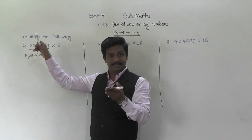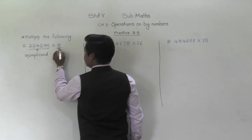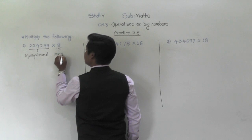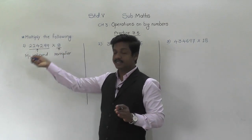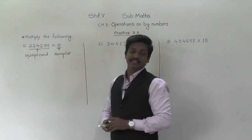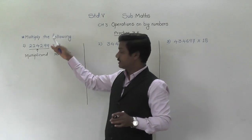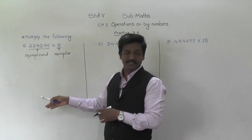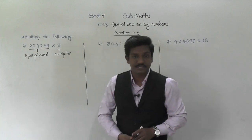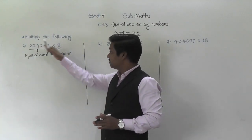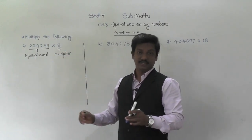And this 8 — the number by which we multiply the multiplicand — is called the multiplier. The number by which we are going to multiply is called the multiplier. After doing the process of multiplication, the answer which we get at the end is called the product. So after multiplying 2,24,299 by 8, whatever answer we get will be our product.